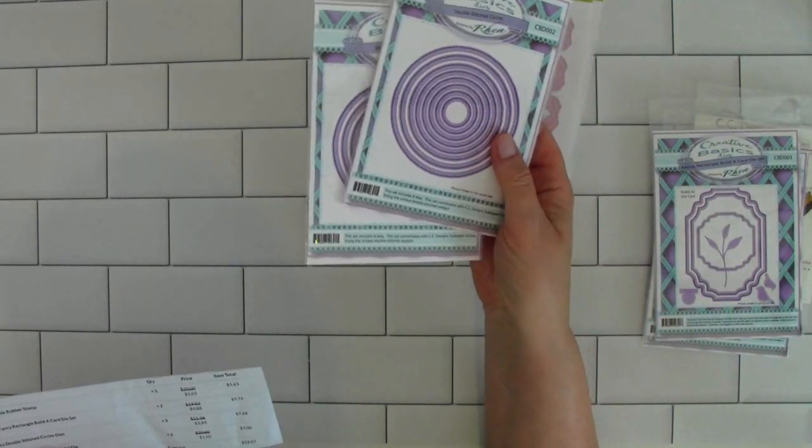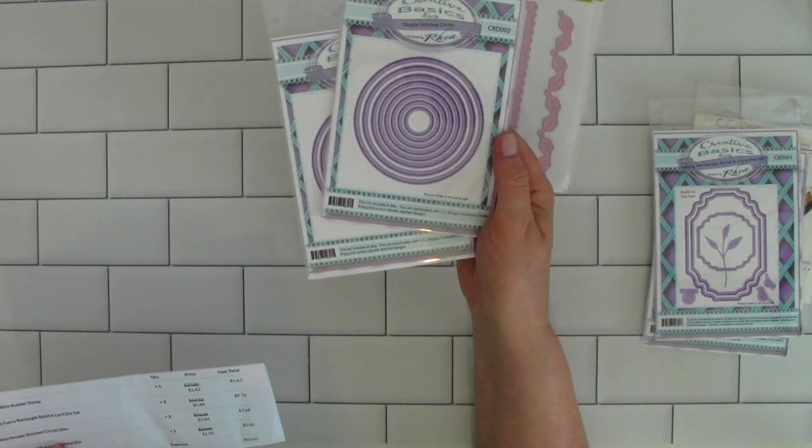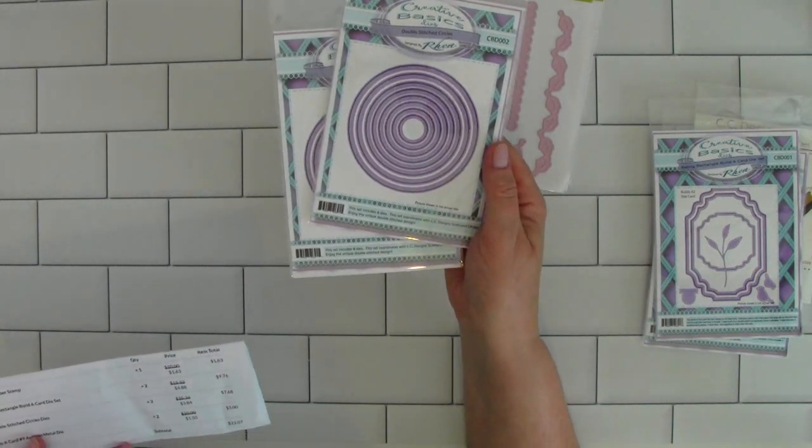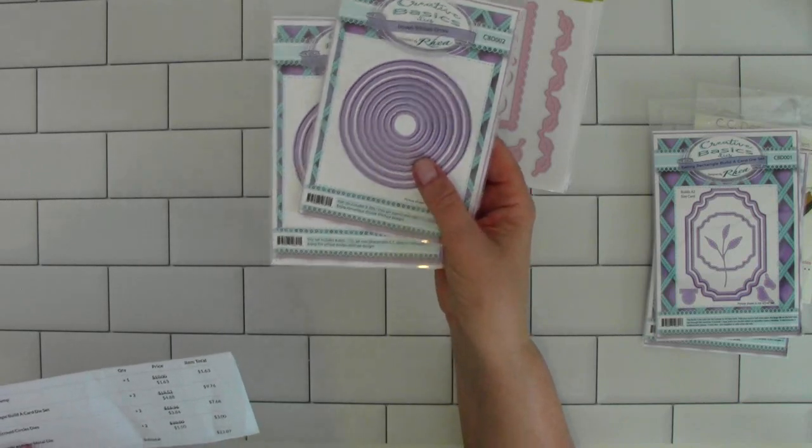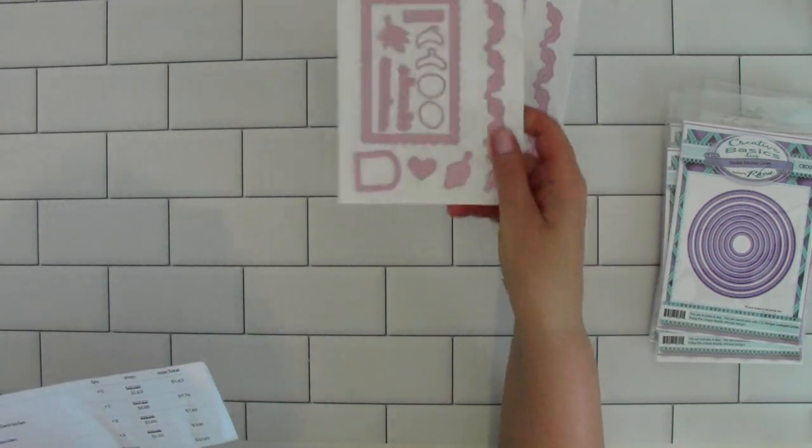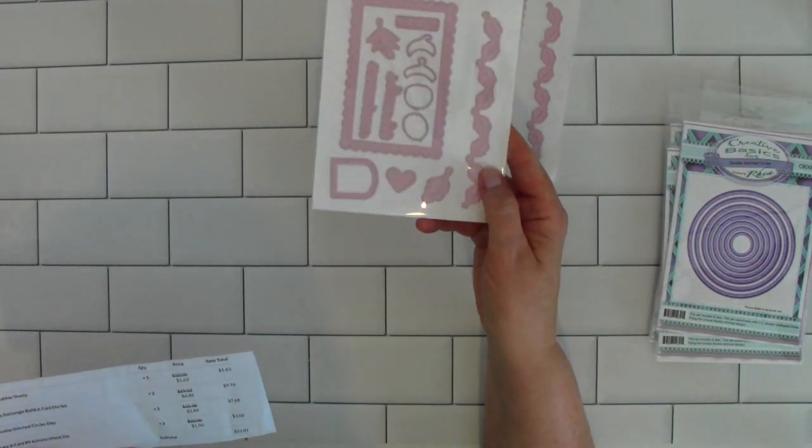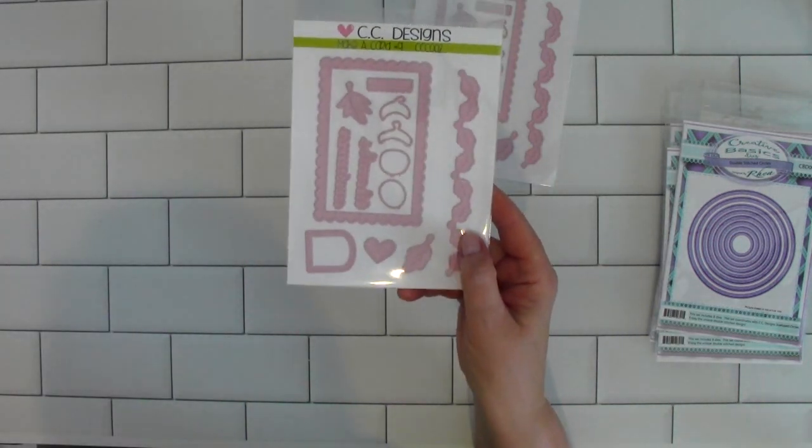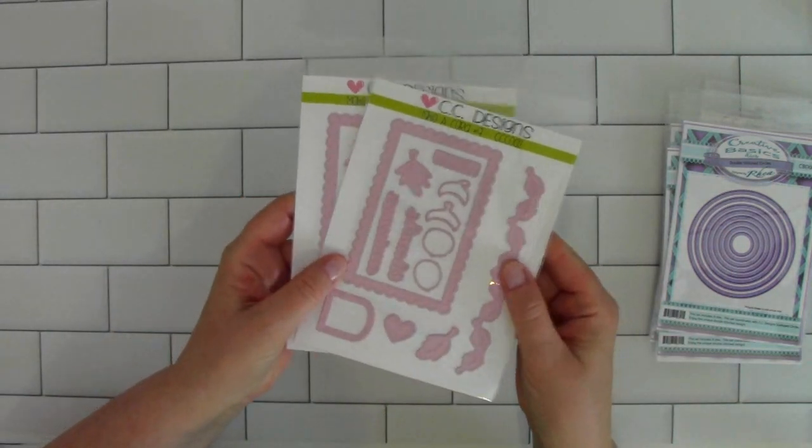The double stitched circles were normally $15.36 each and they're on sale for $3.84, so I picked up two for under $8. The autumn metal die set was normally $20 each and they're on sale for $1.50, so I got two of them for $3.